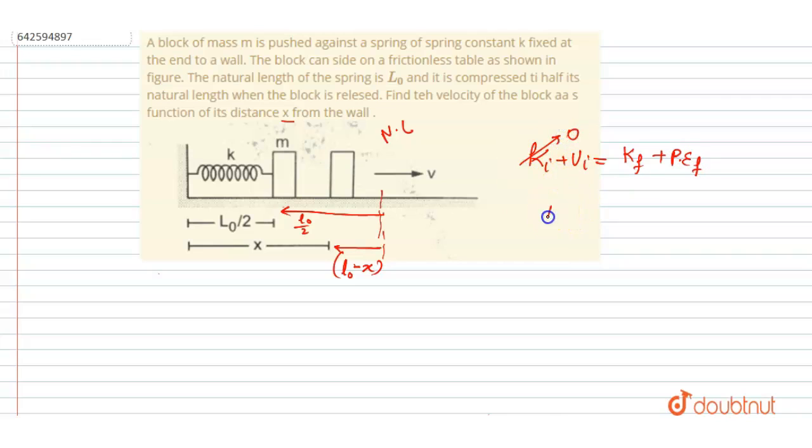Initially the potential energy was K L0 by 2 whole square by 2. This will be equals to final kinetic energy plus final potential energy.